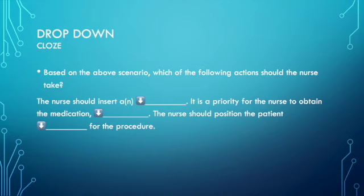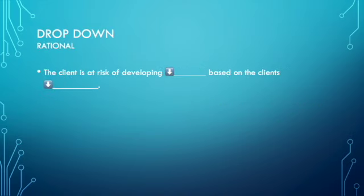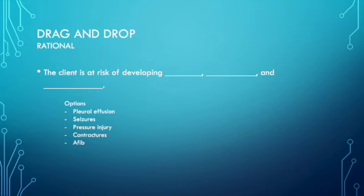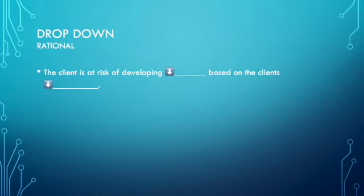The drop-down style is also very similar. Based on the above scenario, which of the following actions should the nurse take? You might say the nurse should insert — and then the drop-down may offer options like peripheral IV or Foley catheter. It is a priority for the nurse to obtain the medication — say lidocaine — and then the nurse should position the patient, such as supine, lying on the right side, or reverse Trendelenburg, depending on the procedure. The client is at risk for developing — and you'd select from the drop-down based on the client condition. Some options you drag in, others are drop-downs specific to that spot in the response.